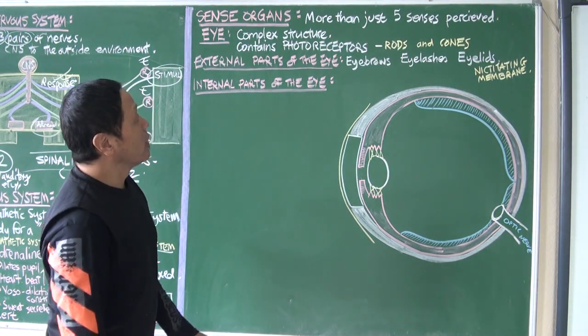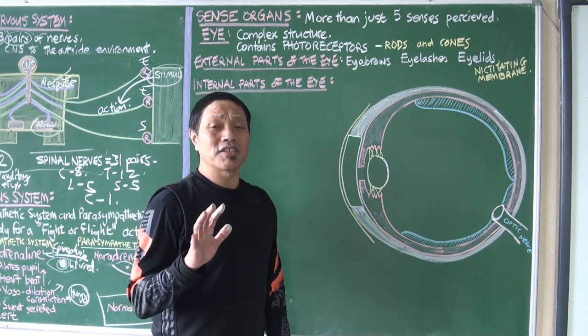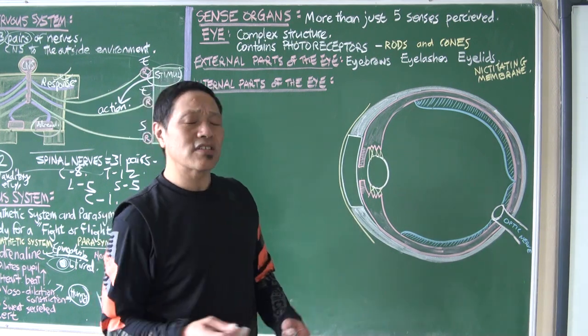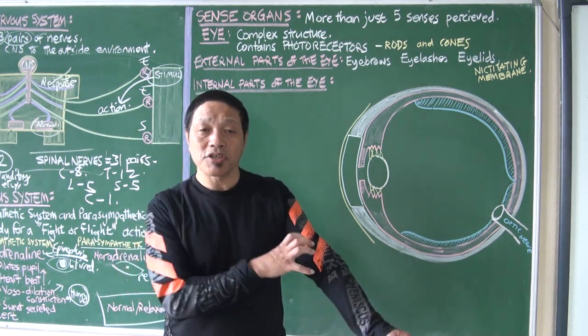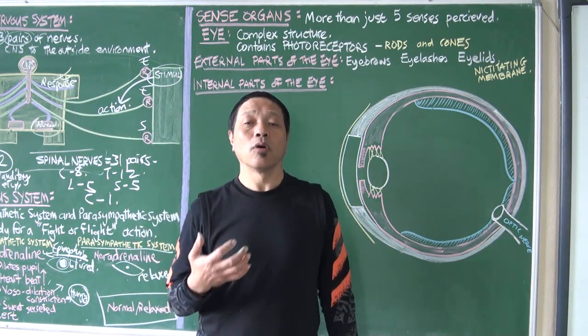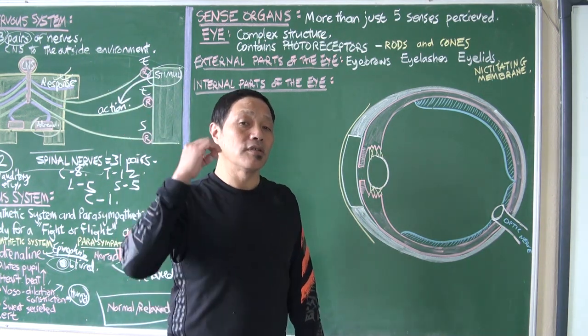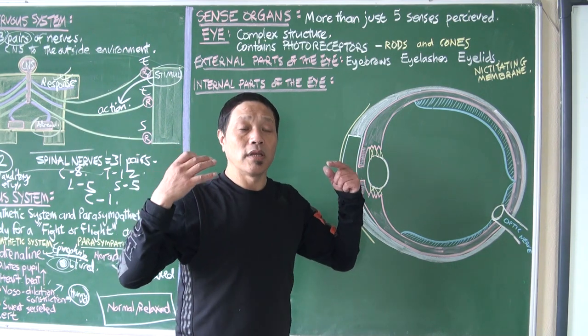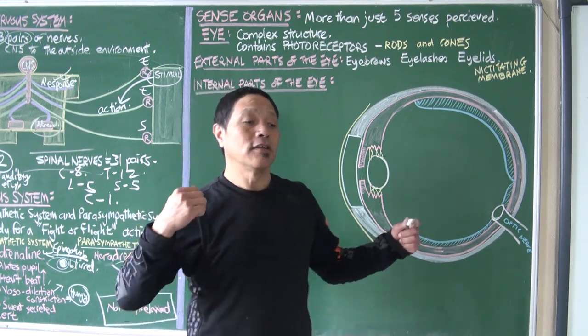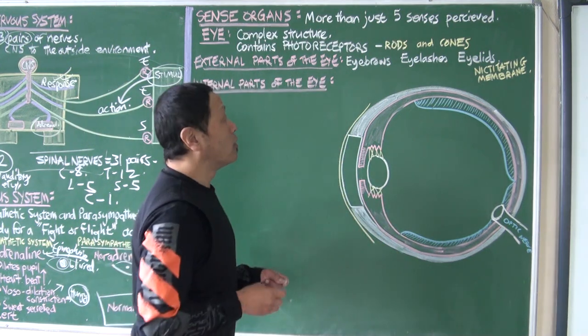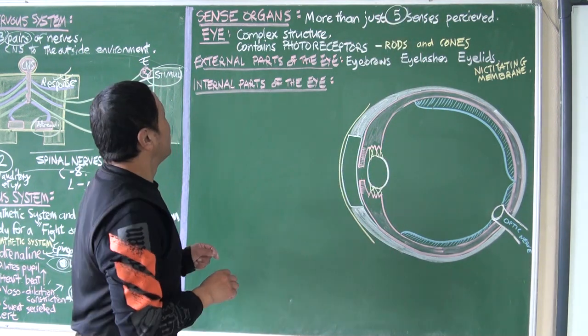Sense organs - we have five sense organs, but they collect more than just five senses. For instance, the skin is not just designed to perceive touch, it can perceive pressure, pain, texture. The ears not only hear sound but also keep the body's balance - static balance and dynamic balance. So when we talk about five sense organs, it's not just five senses that are perceived, but more than that.